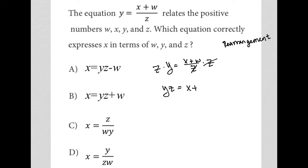Lastly, I'm going to subtract w from both sides in order to get x alone. The w is canceled out on the right-hand side, leaving me with just an x on the right-hand side. And on the left-hand side, I'd have yz minus w.